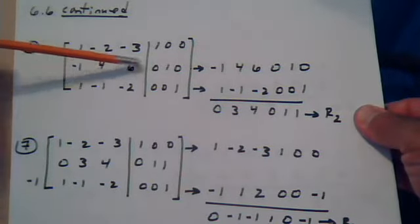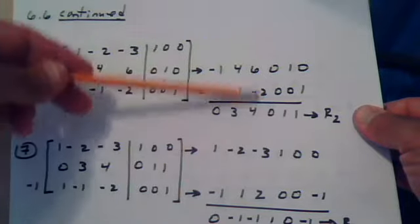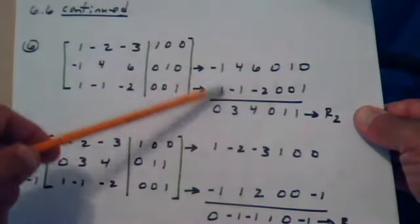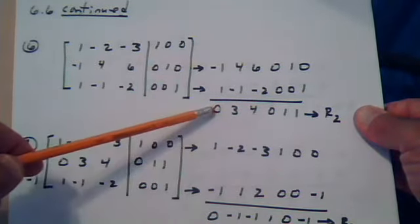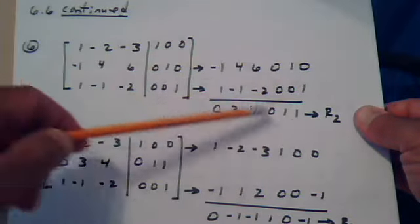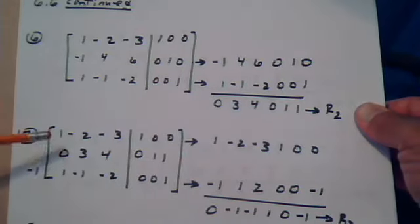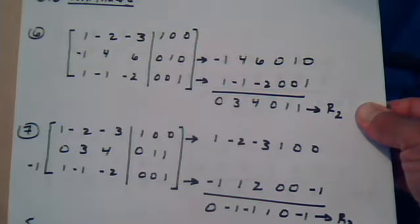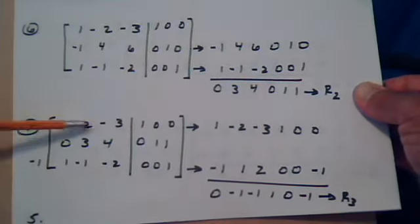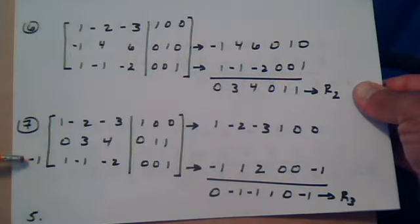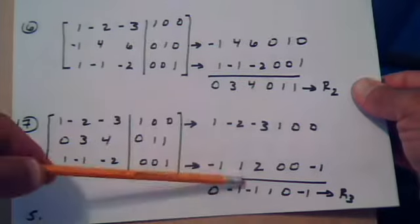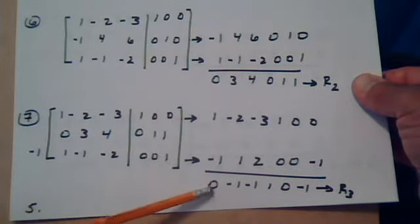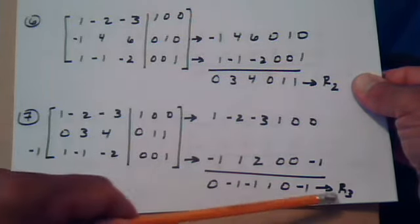I slide this row over, go column by column adding like terms, and notice I get a zero right where I need it. These two cancel and give me a zero. This result is going to replace row two. We now have our zero here, but we still need zeros in other positions. I take row one, slide it over, multiply row three by negative one, slide it over, add column by column — that produces a zero where I need it, and this row replaces row three.